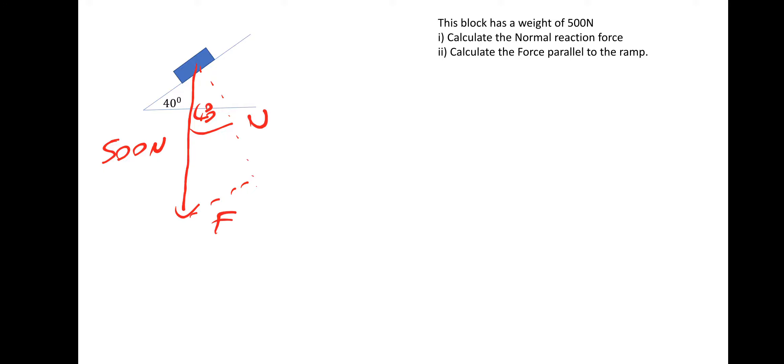This is the normal reaction and this is the frictional force parallel to the ramp. You can draw this if you wish, but once you've got the technique, you don't really need to. So calculate the normal reaction. The normal reaction would be the magnitude, 500, multiplied by cos 40. And the frictional force is 500, and it's opposite the angle, so it's sine 40.